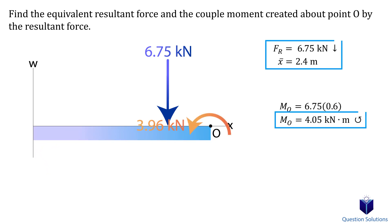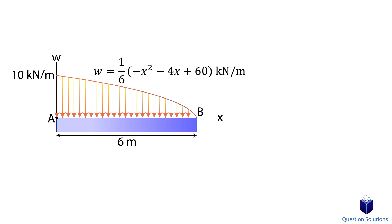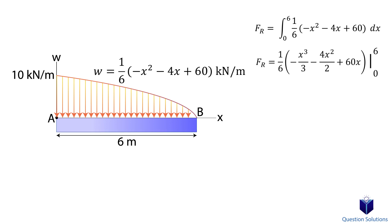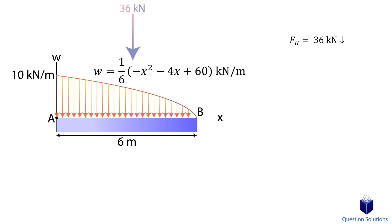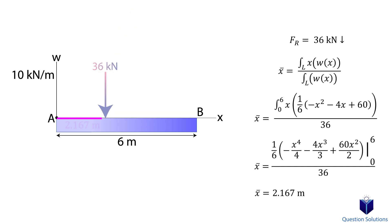Let's take a look at one last example where we need to represent the distributed load as a single resultant force. As with the previous question, we start off with an integral to find the resultant force. The lower bound starts at 0 meters and the upper bound is 6 meters. Solving gives us the resultant force, which is downwards since our distributed load was also downwards. Next, we need to find the location where we place our resultant force — for that, we use the X-bar equation. Solving gives us our answer, which tells us where to place our resultant force to represent the distributed load.